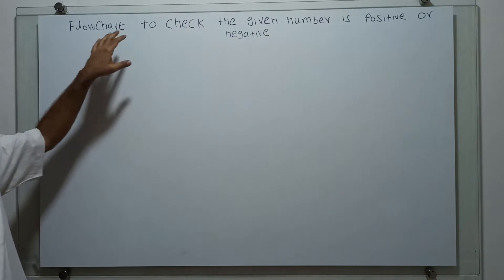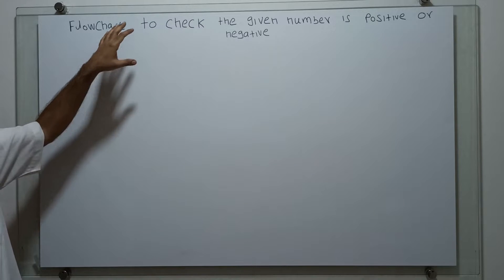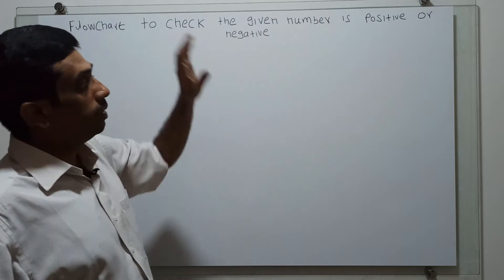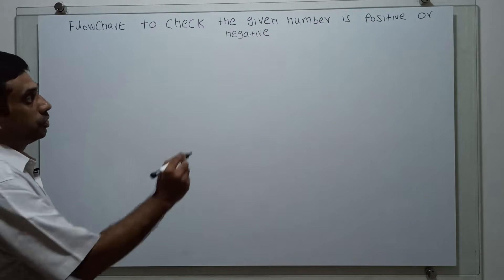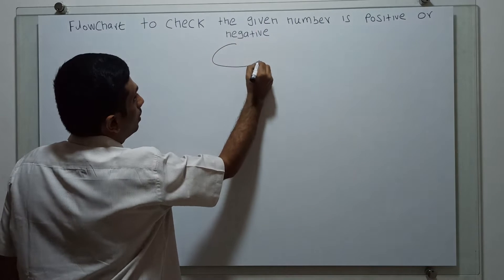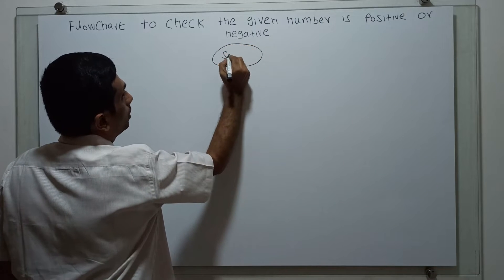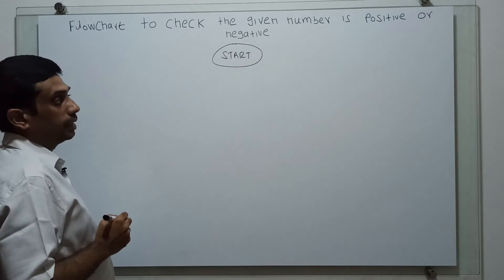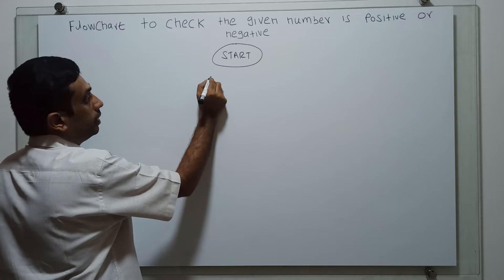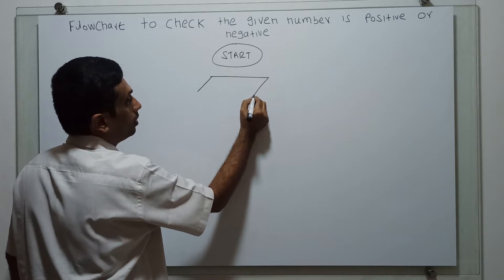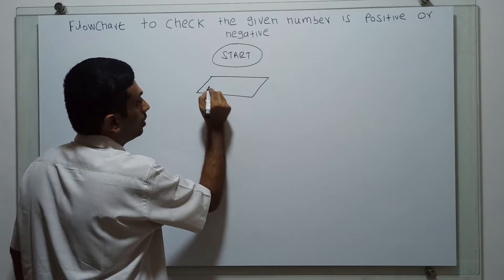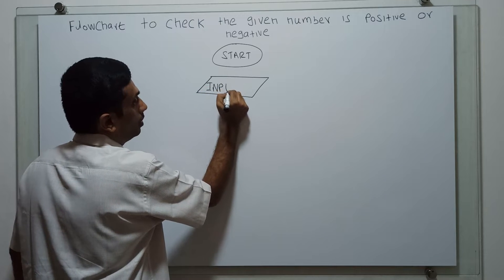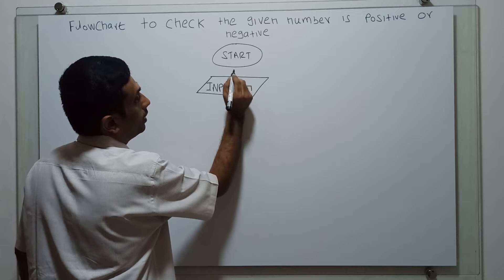Hello friends, we are going to draw a flowchart to check whether the given number is positive or negative. This is the logical start of the flowchart. I am obtaining the input in a variable n.